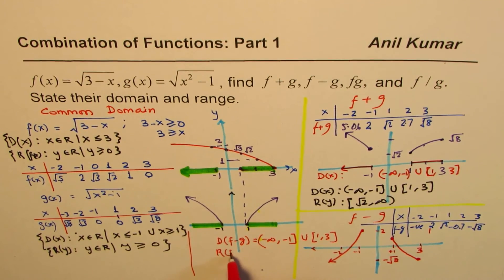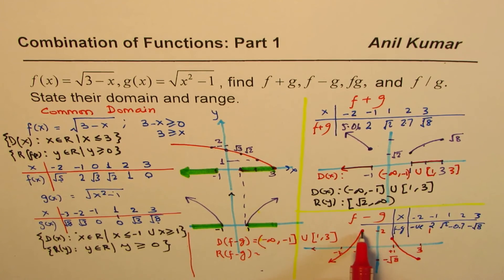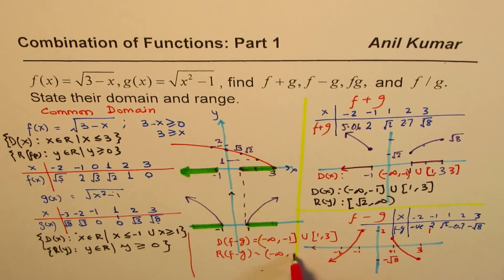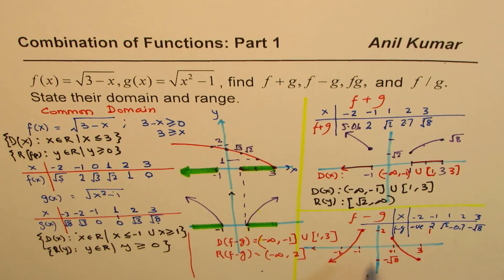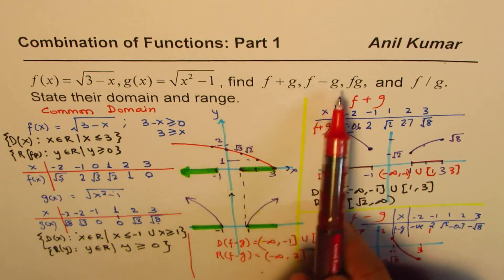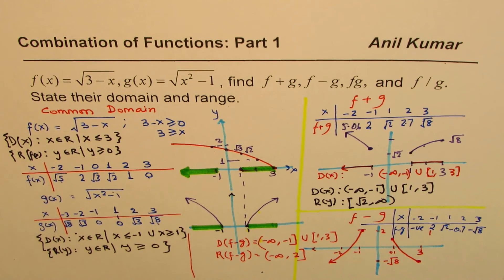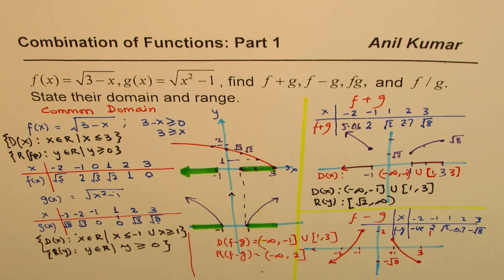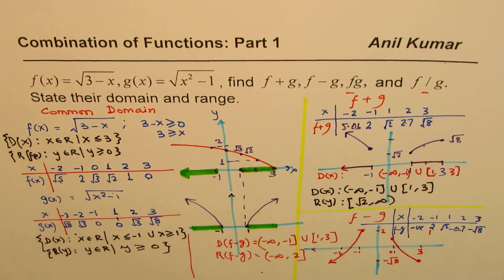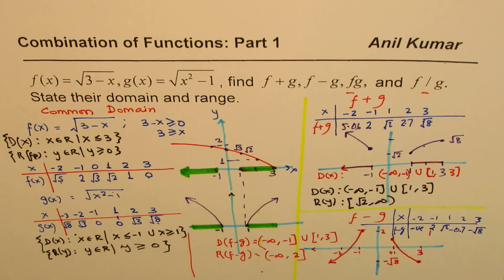As for the range of f minus g, it is from minus infinity to 2, where 2 is included. That is how you find the domain and range for the sum and difference of these functions. I hope that helps and gives you an idea of how to combine functions. In part 2, we'll consider their product and quotient. I'm Anil Kumar — thank you for watching, and all the best.